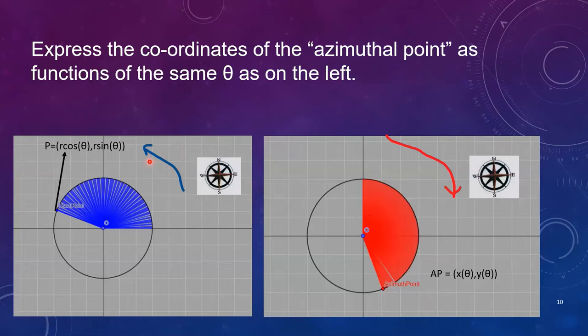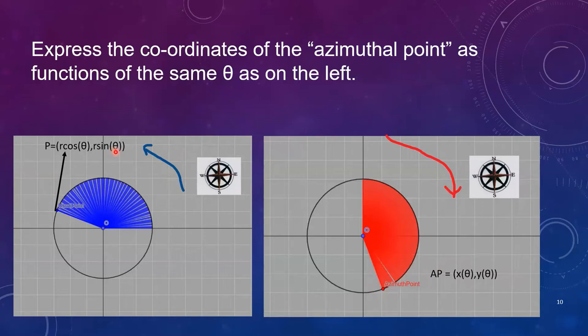So to recap I want to take this point and express it in a parametric equation such as this where I have a function of theta for my x coordinate and a function of theta for my y coordinate, but I want to leverage the theta that I have over here using the usual angle. This would be a great spot for you to pause if you want to think about how you would solve the problem before we proceed.